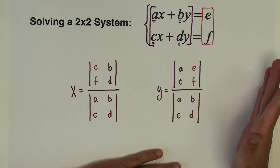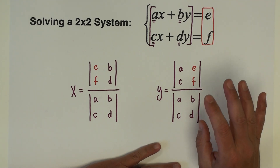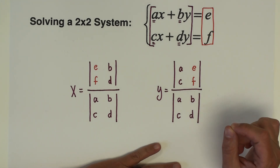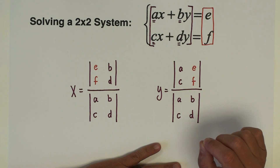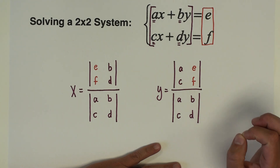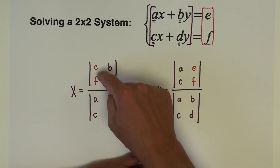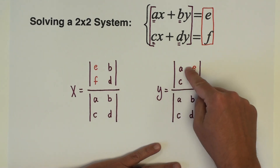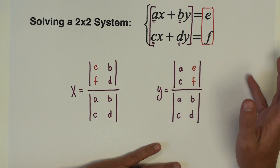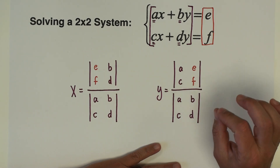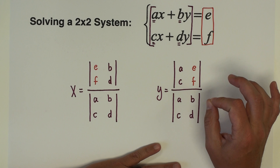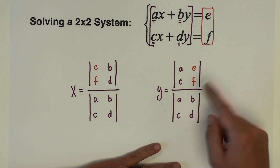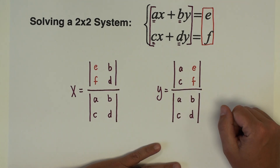That's the entire setup — we're just going to do a bunch of two by two determinants, just as we learned in the last video. These are super easy and fast to compute because it's just diagonal minus diagonal. Really easy, quick calculations as long as we know how to set up all the determinants.